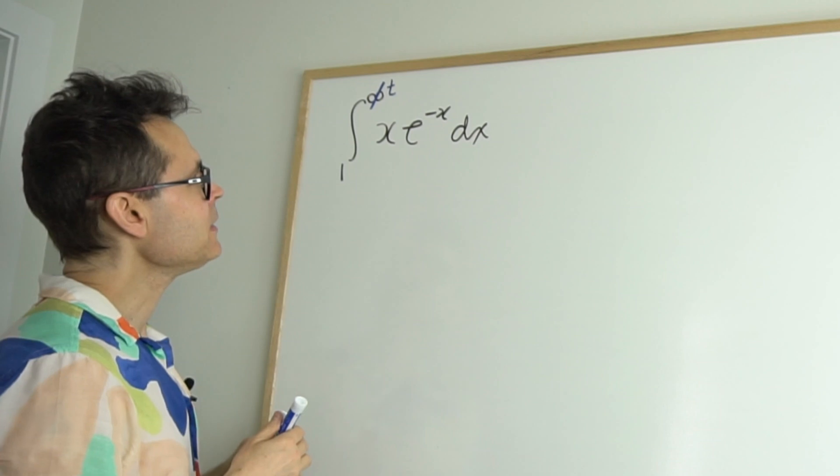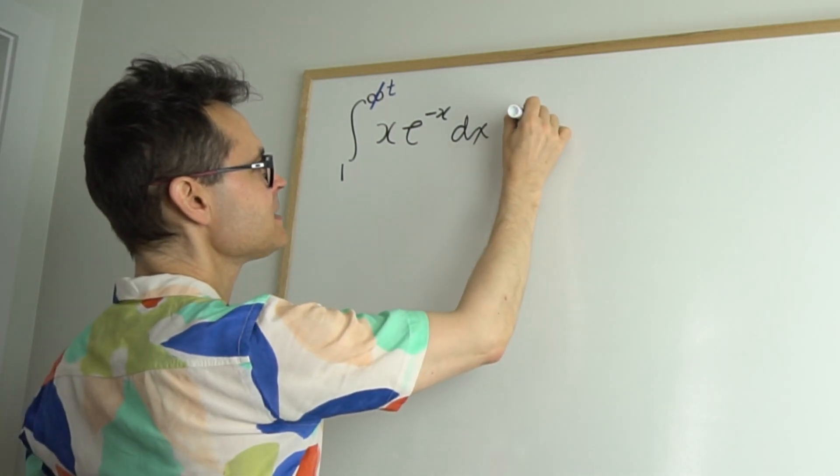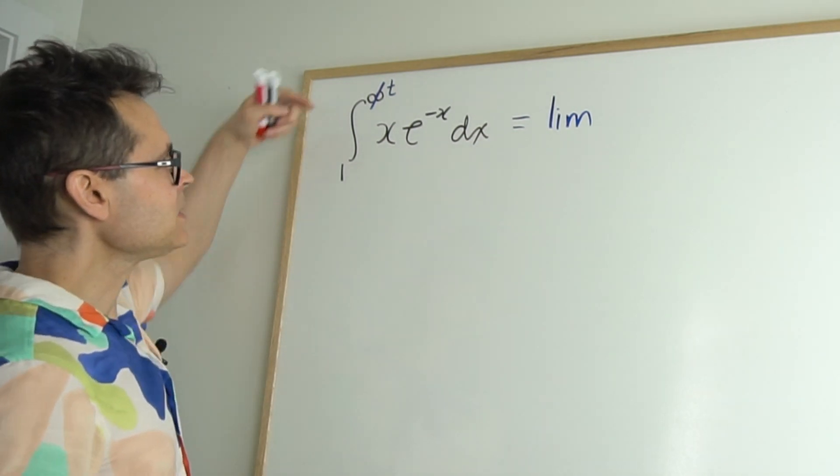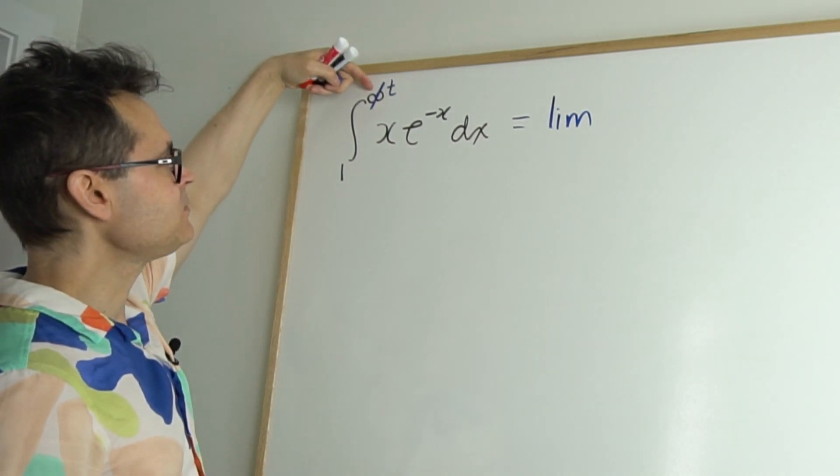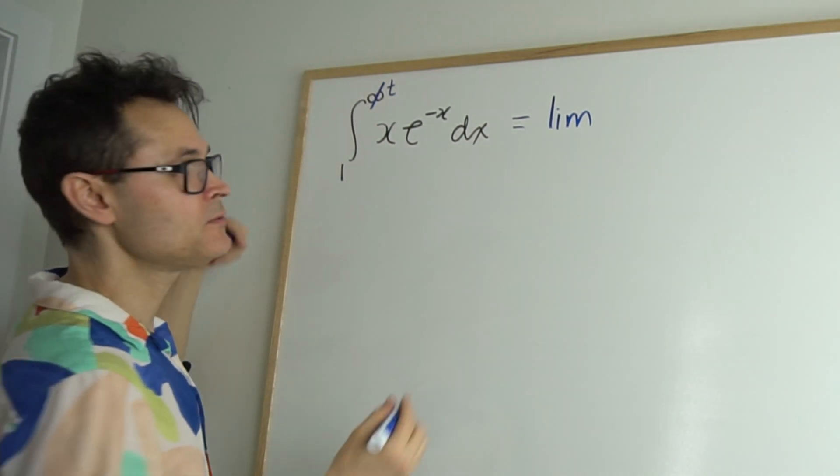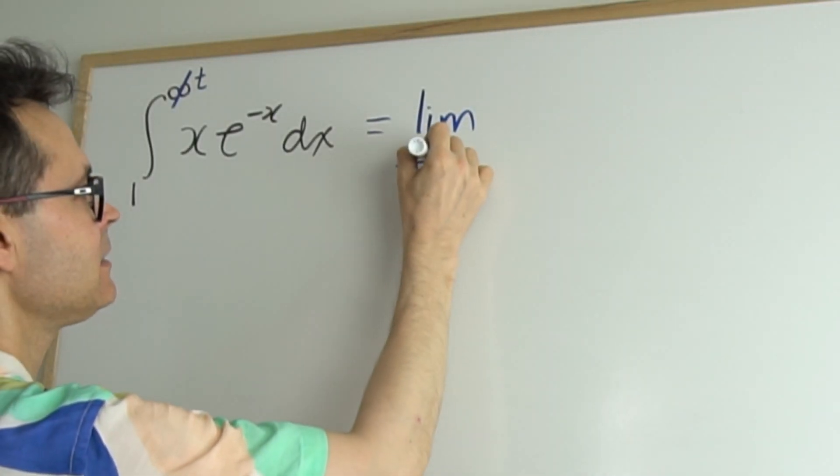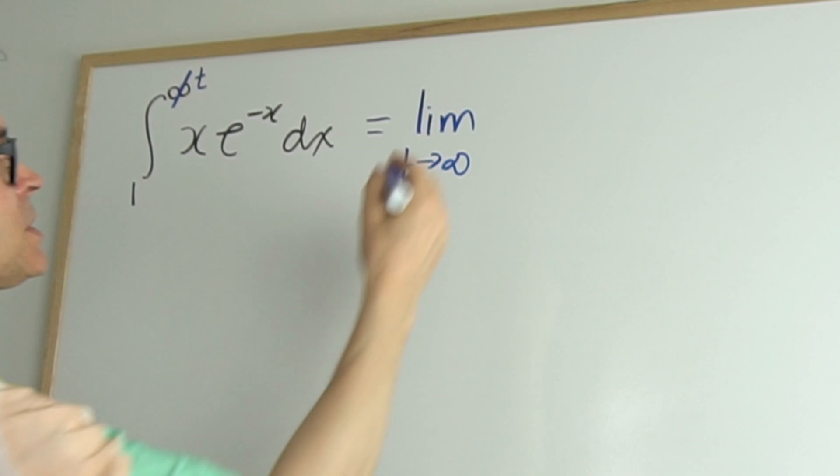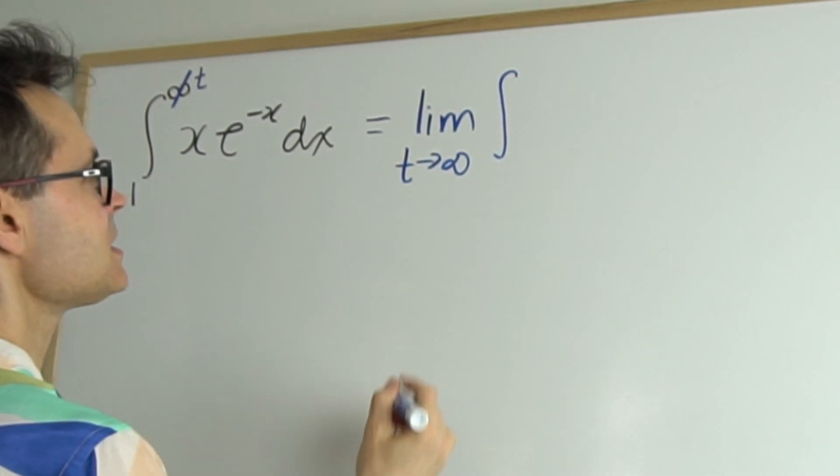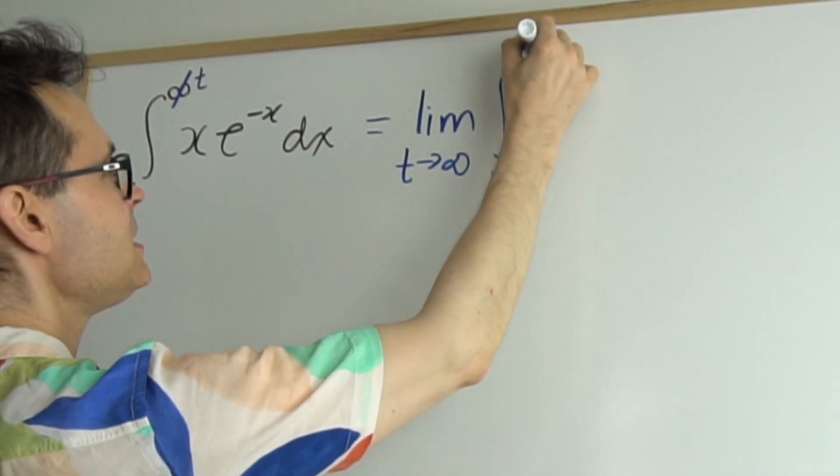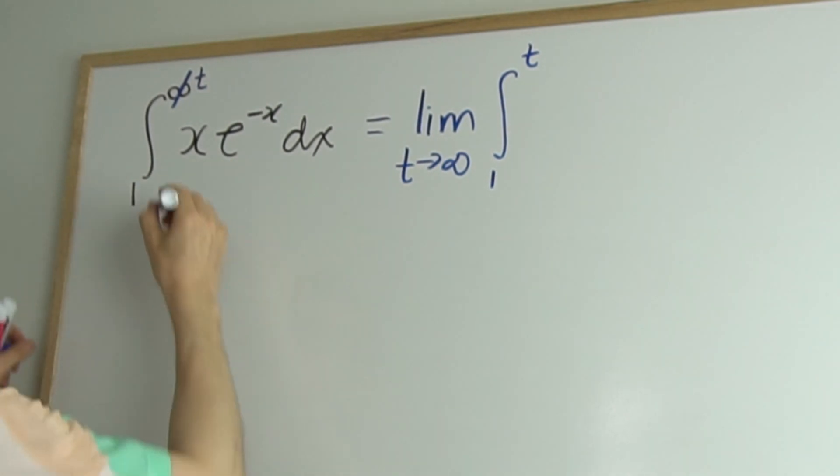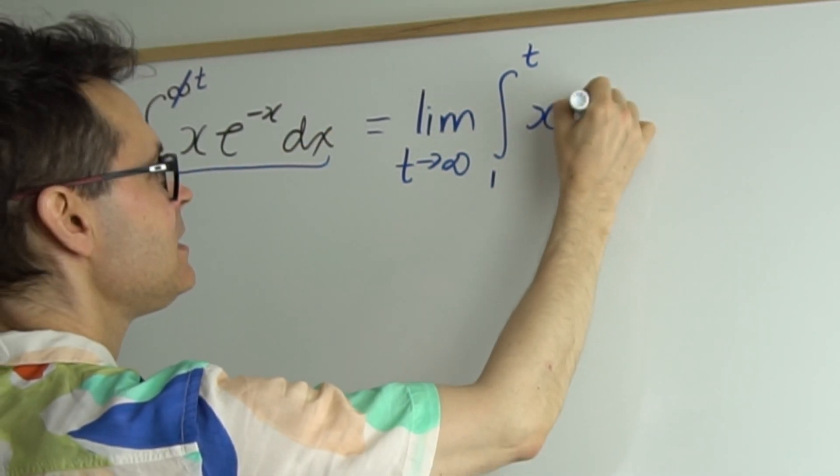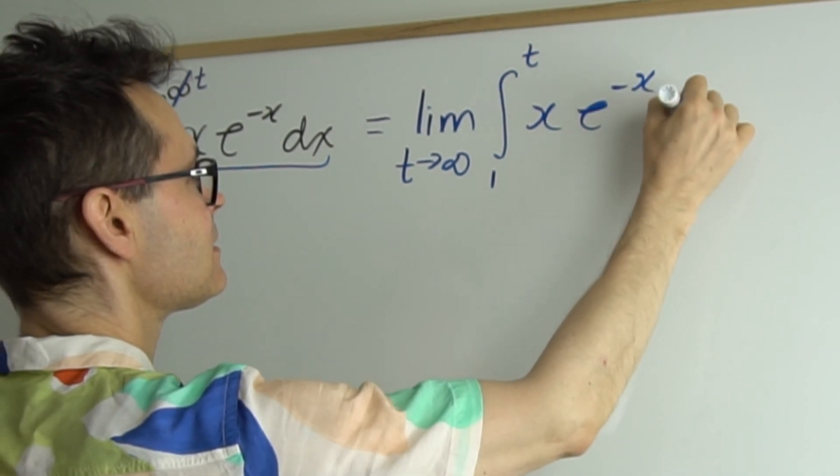And then what I'm going to do is I'm going to write it as a limit. Now watch how nicely this fits together. What I'm going to do is not evaluate at infinity but as t approaches infinity. So we're going to let t get closer to infinity. And then the rest of it just gets rewritten. I write my integral symbol from 1 to t and then the rest of it the integrand is exactly the same. So x e to the negative x dx.